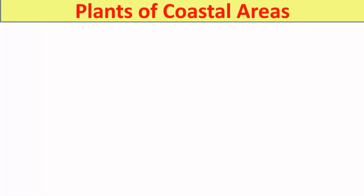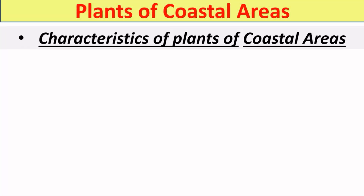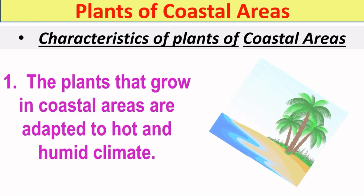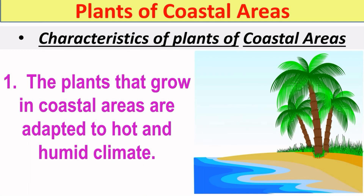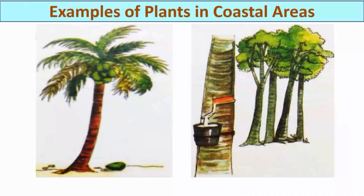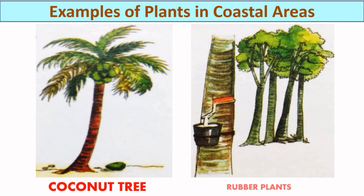Next are plants of coastal areas. Plants that grow in coastal areas are adapted to a hot and humid climate because of the presence of moisture or water droplets in the air. Examples of plants found in coastal areas are coconut tree and rubber plant. These are plants grown on the coastal areas, meaning on the banks of rivers, ponds, or at the seashore.